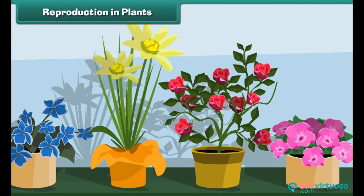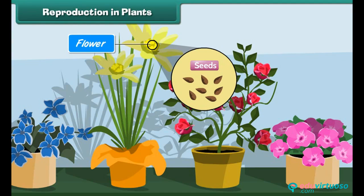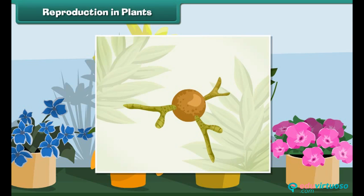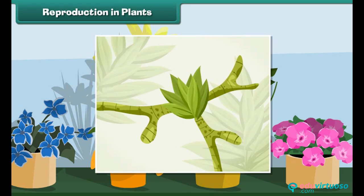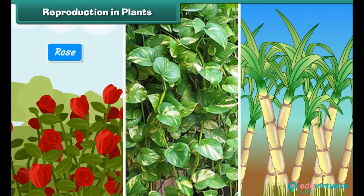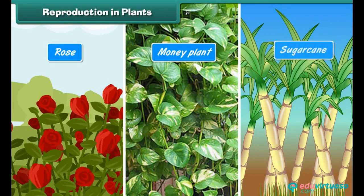Plants reproduce in different ways. Most of the flowering plants produce seeds. Some plants do not produce seeds — they produce spores which can grow into a new plant. Some plants can reproduce from their body parts. For example, potato can be developed from an underground stem having buds on it. Rose, money plant, and sugar cane can be developed from stem cuttings.